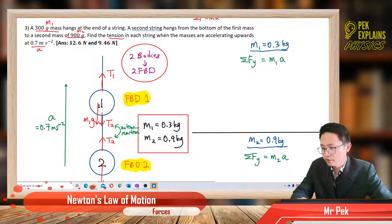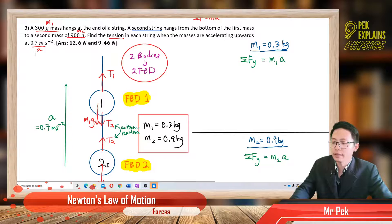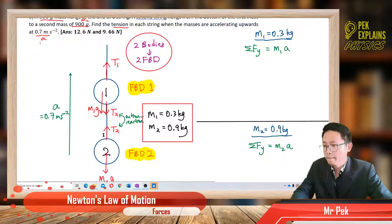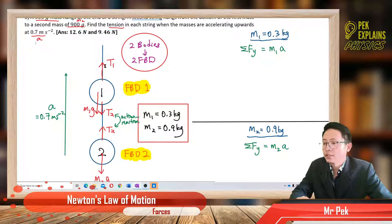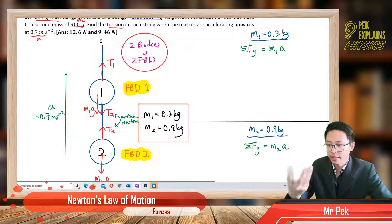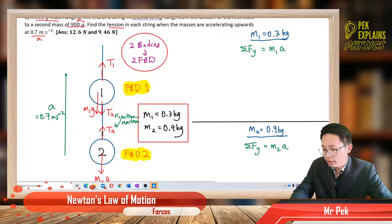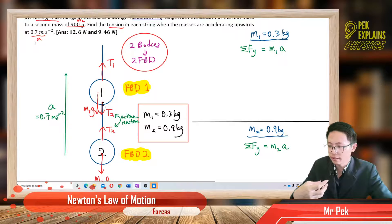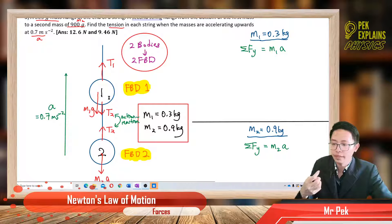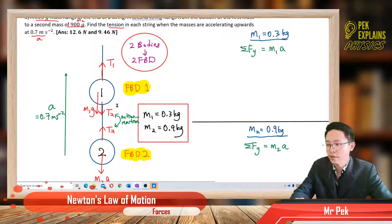The first mass has free body diagram one, and the second mass has free body diagram two. For the first mass, the top string is pulling up, so tension T1 is going up. Its own weight M1G is pulling down due to gravity. The bottom string is also pulling mass one down — pulling down — because of mass two. So tension T2 is going downward. That's free body diagram one.